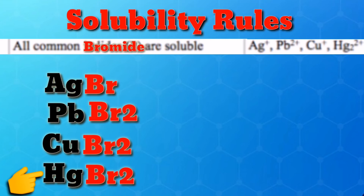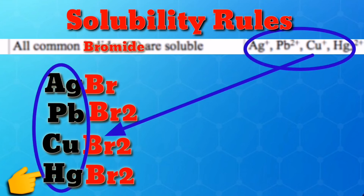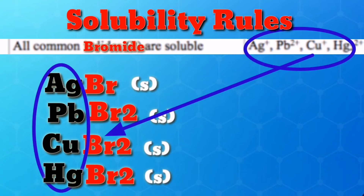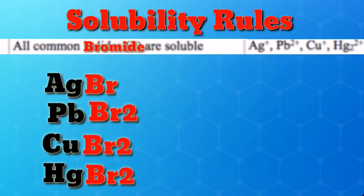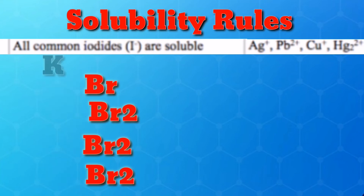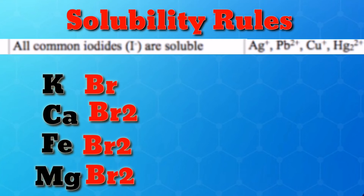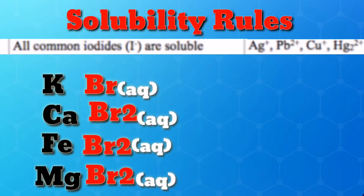Rule 6: All common bromides are soluble, except bromide compounds with silver, lead, copper, and mercury. Silver bromide, lead bromide, copper bromide, and mercury bromide are insoluble. All other bromides — such as potassium bromide, calcium bromide, iron bromide, and magnesium bromide — are soluble.